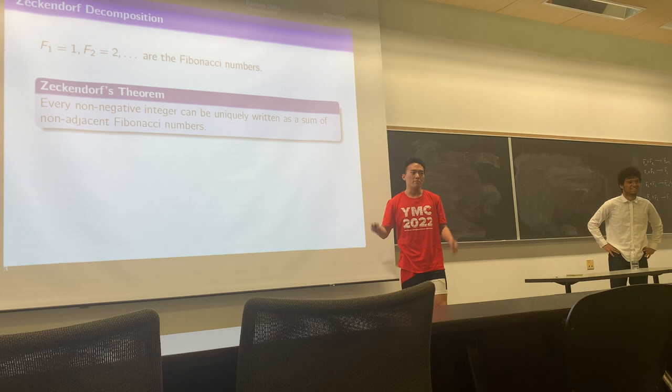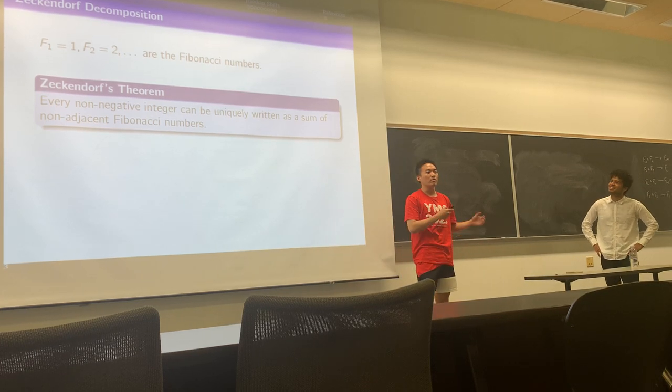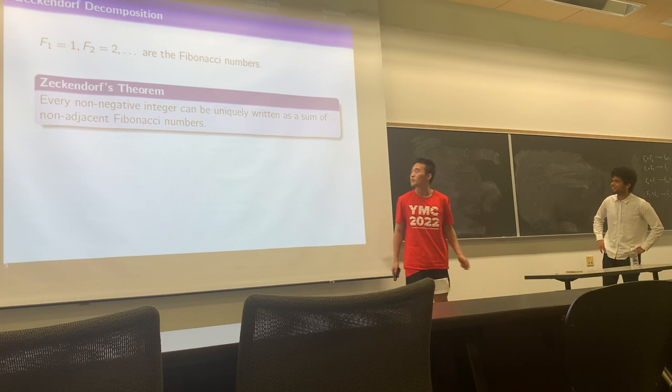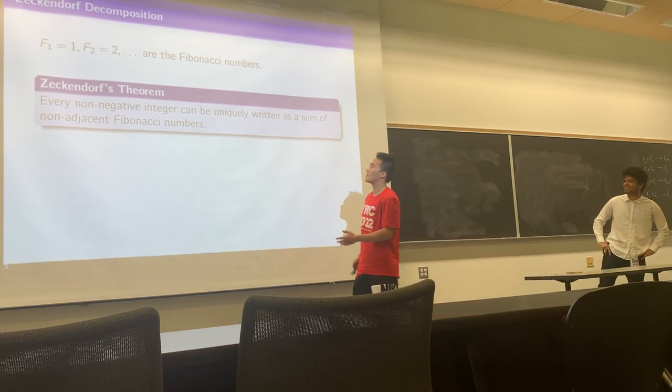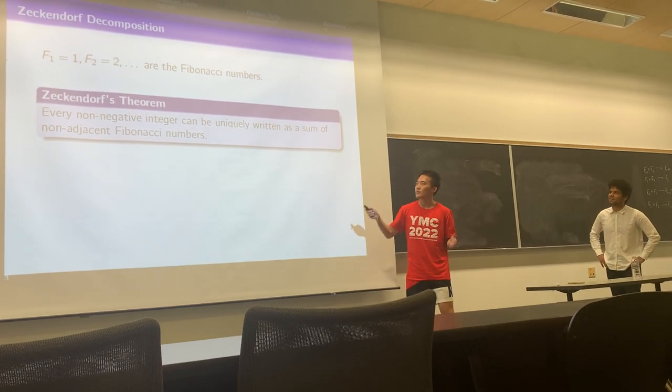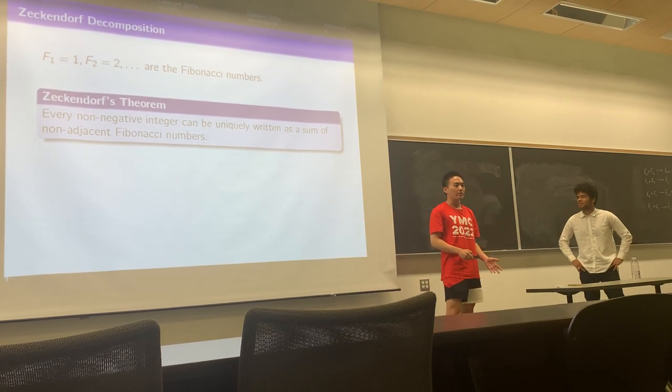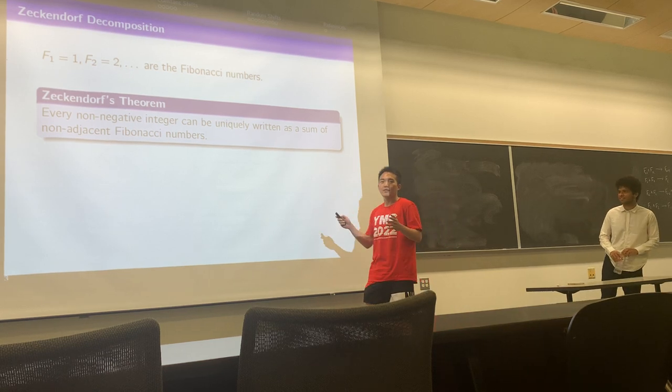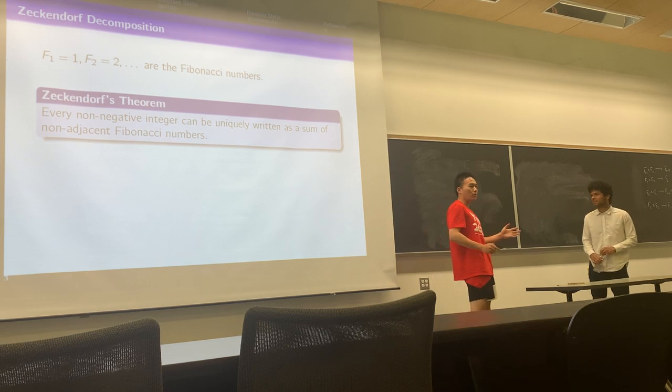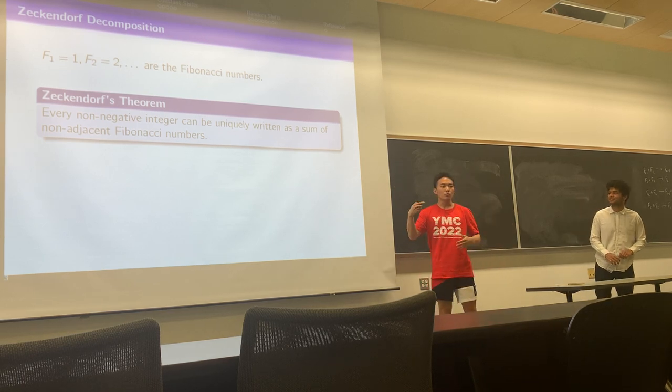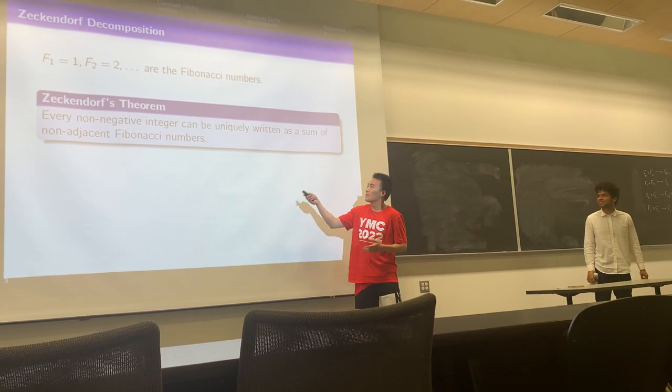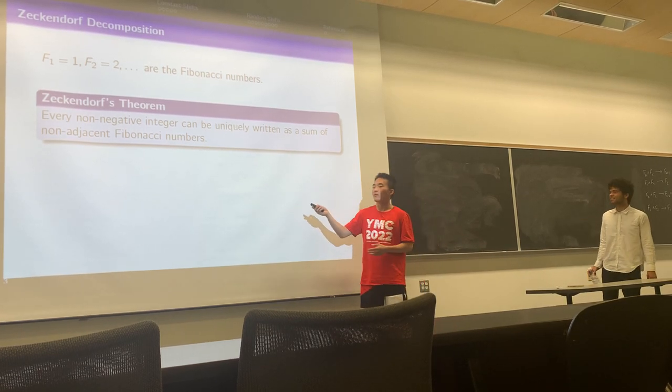Fibonacci numbers start with one and two, defined by recurrence relation. Get the next one from adding the previous two. Zeckendorf's theorem says that every non-negative integer can be uniquely written as a sum of non-adjacent Fibonacci numbers. The proof works really easily. Every time you choose the largest Fibonacci number possible, and then you run this greedy algorithm until you reach the end, and we claim that this is the proof of Zeckendorf's theorem.